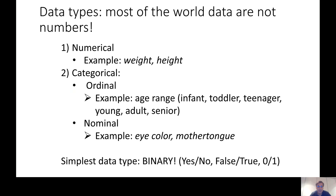The simplest type of data is binary data — just yes or no, false or true. Binary can be classified as any of the data types: numerical (0 or 1), ordinal (1 is bigger than 0), or nominal (just the labels false or true). So binary is a simple data type.